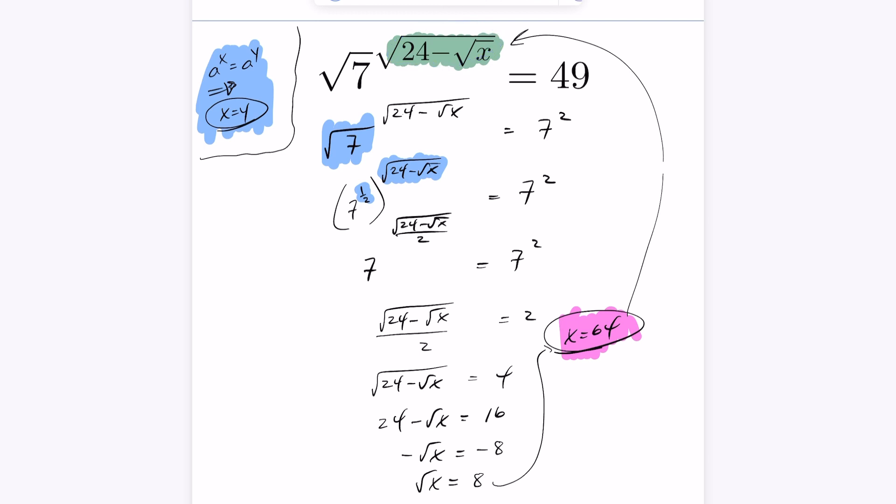So what we're going to have here, if I let x be 64, on the left hand side, you'll have the root of 7 to the power of 4, which is exactly 7 to the power of a half to the power of 4.